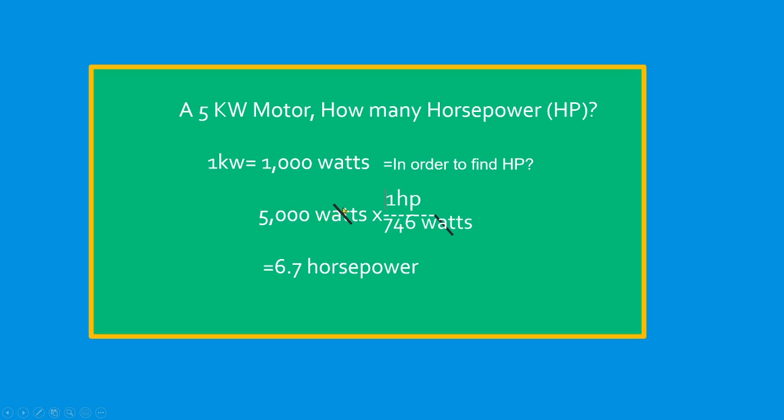So 5,000 divided by 746, the result is 6.7 horsepower. Just follow the formula.